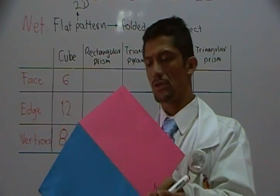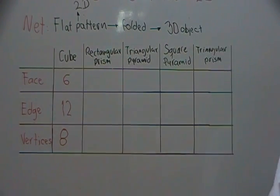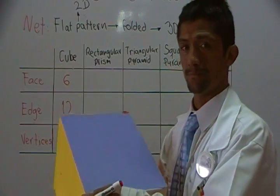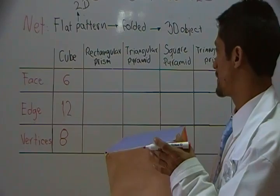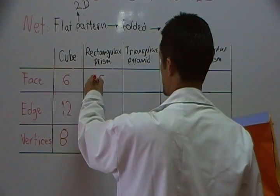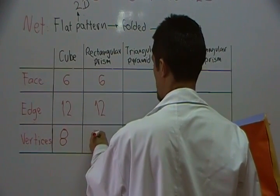Actually, a cube is a rectangular prism in which all the faces are squares. In more general terms, this would be a rectangular prism. So it basically shares the same characteristics with a cube, the same number of faces, the same number of edges, and the same number of vertices.